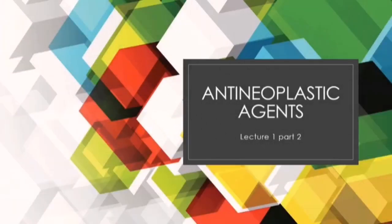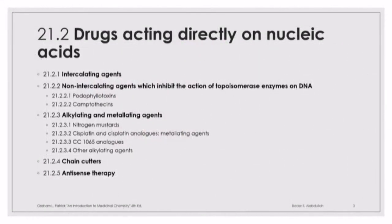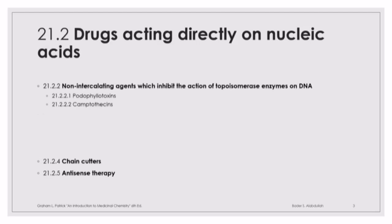Welcome back to lecture one, part two on antineoplastic agents. We've been discussing drugs acting directly on nucleic acids. In the previous lecture, we discussed intercalating agents. In this part, we'll be talking about non-intercalating agents which inhibit the action of topoisomerase enzymes on DNA, the podophyllotoxins and the camptothecines, as well as chain cutters and antisense therapy.